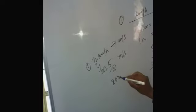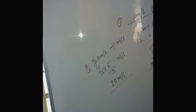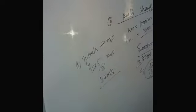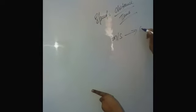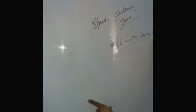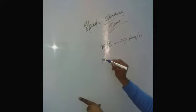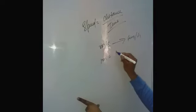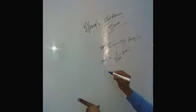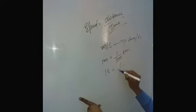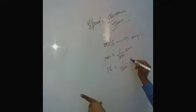The next topic is: if meters per second changes into kilometers per hour. 1 meter contains 1 by 1000 kilometers, and 1 second contains 1 by 3600 seconds.